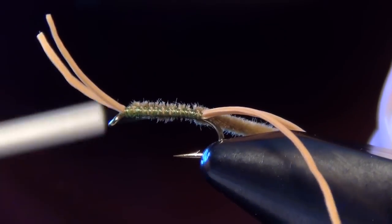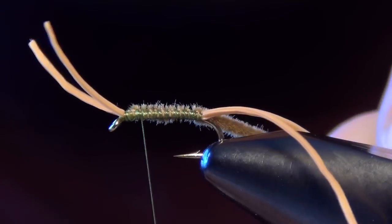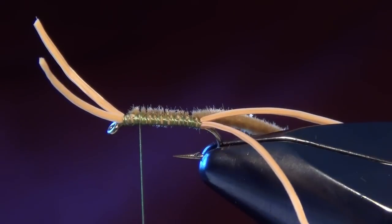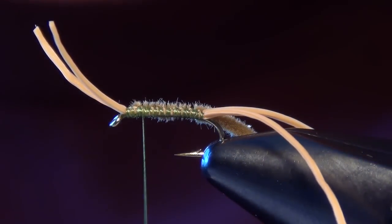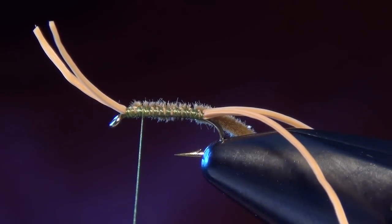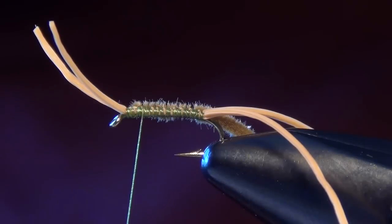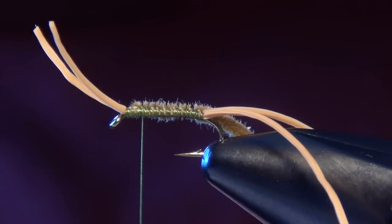Then I'll take my thread forward and right where I tied in that chenille, about an eye's length to two eye's length, you don't want to do less than an eye or more than two eyes. That's going to be the point where we tie in our legs. We're going to use the same material, the ginger colored Lifeflex.